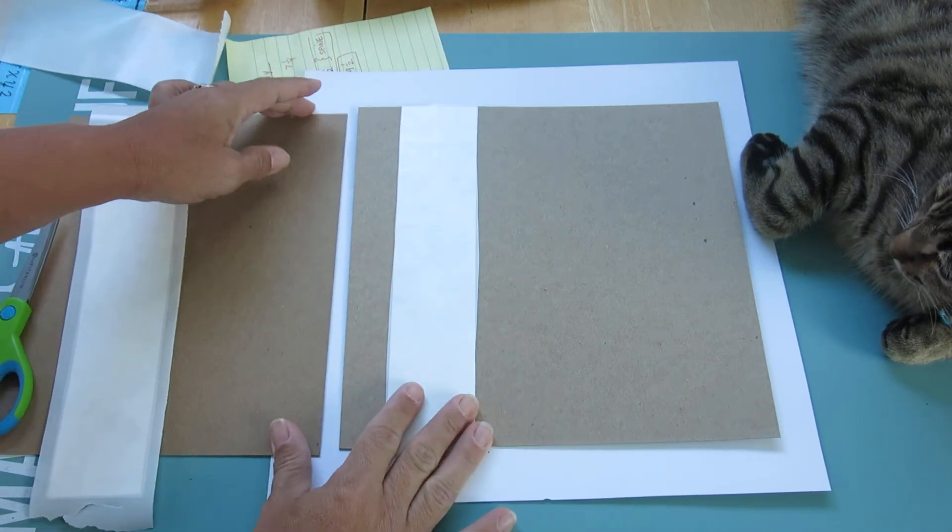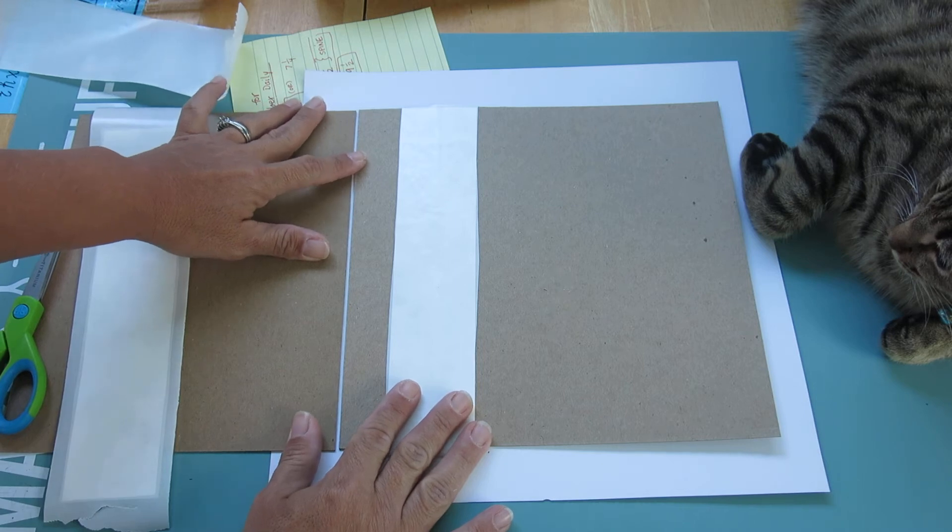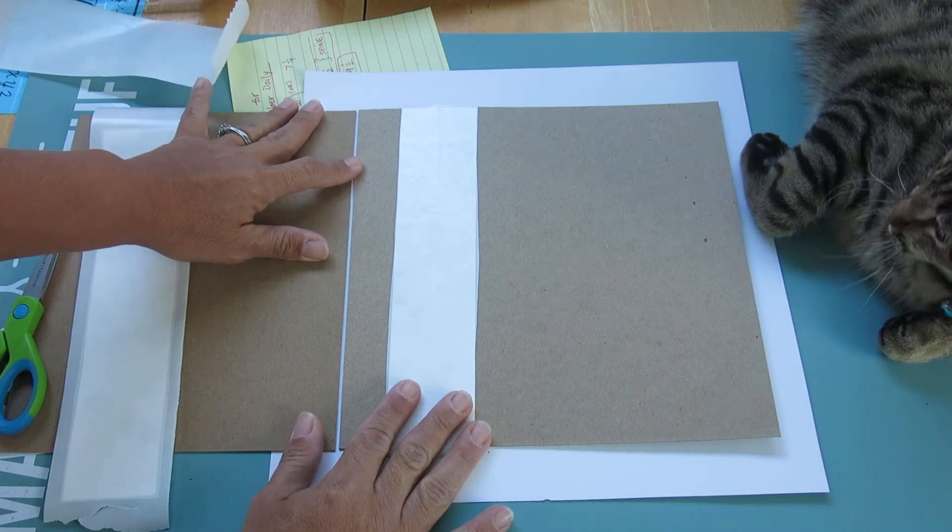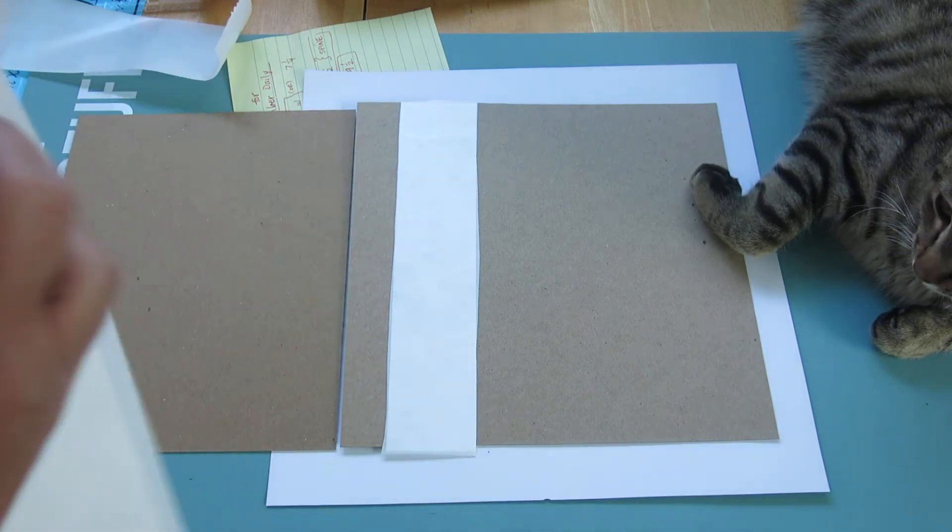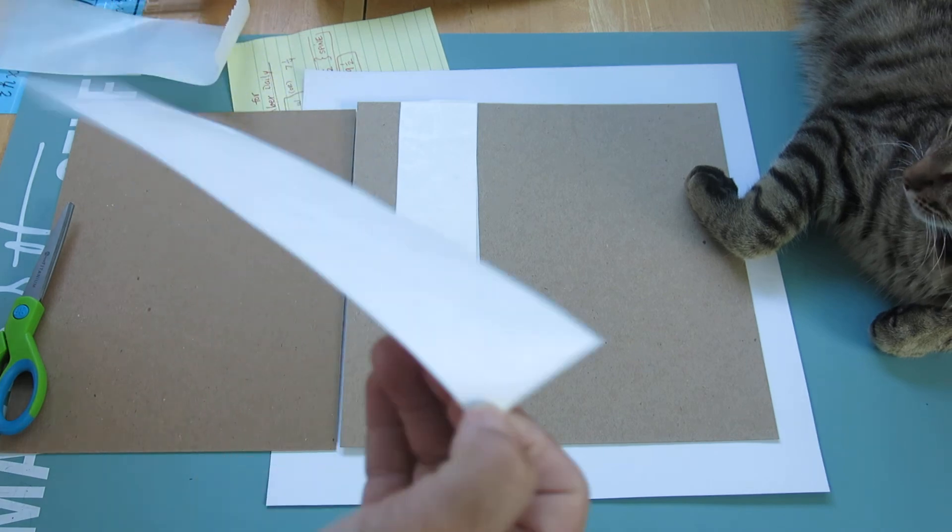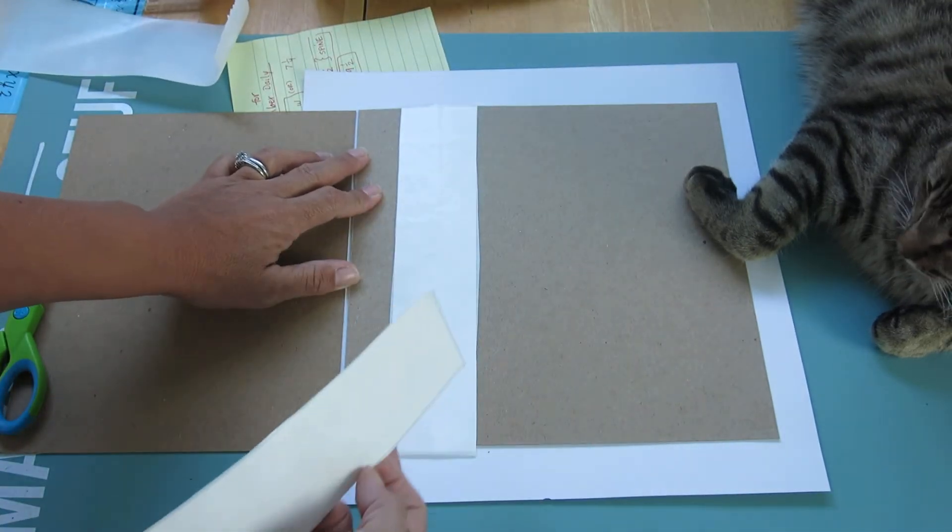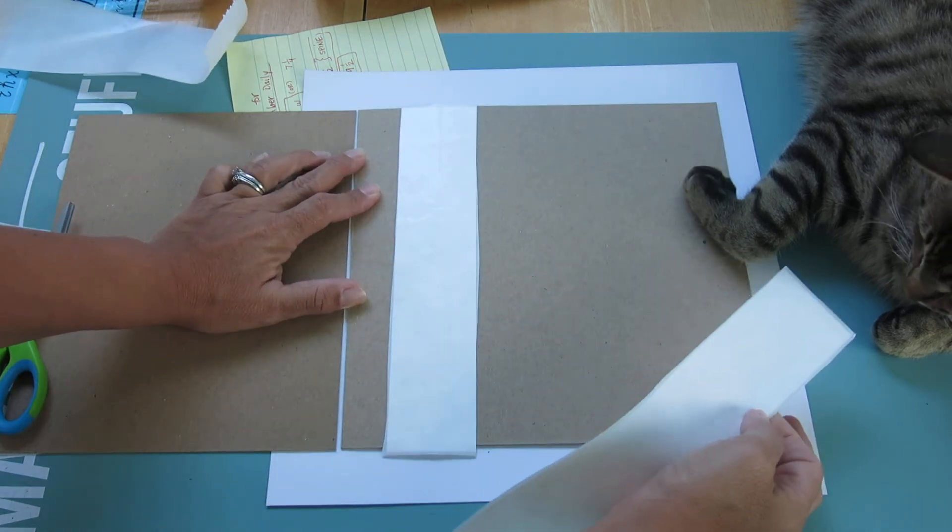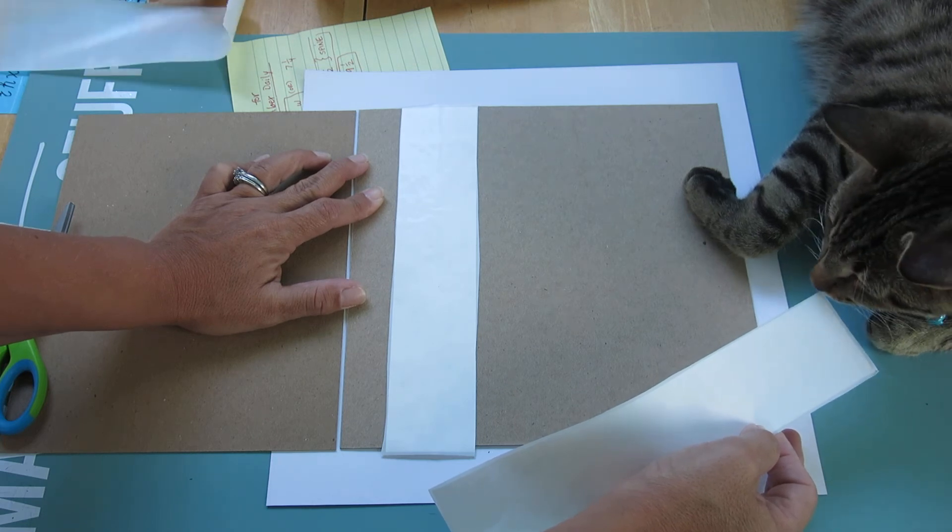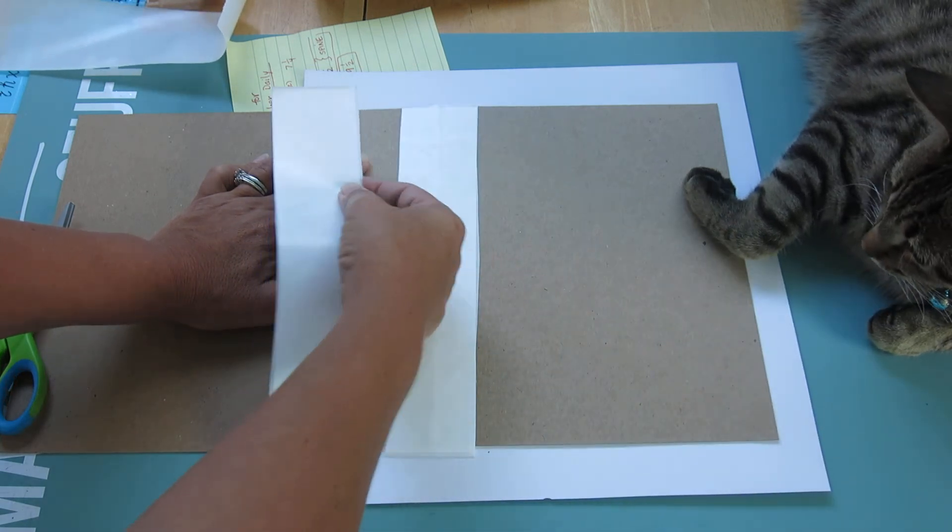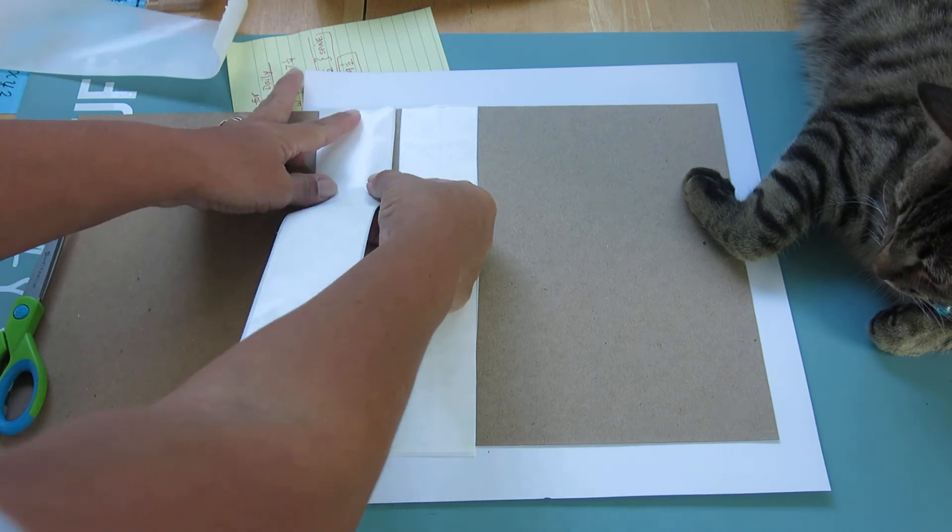Then we're going to do the same to this side, eighth of an inch. And I am eyeballing it. You could get a ruler and line it up and see if it really is an eighth of an inch, but I'm not going to do that because I'm okay with eyeballing. So then I just want to make sure it is straight. That my friends is important. And then we're going to apply that there.